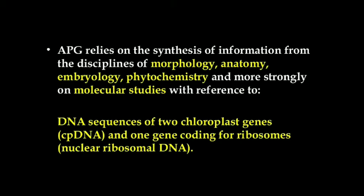APG relies on the synthesis of information from many disciplines like morphology, anatomy, embryology, phytochemistry, and most strongly on molecular studies. It mainly depends on classifying plants based on differences in DNA — differences in the molecular structure of genetic material with reference to DNA sequences in the chloroplast DNA and also nuclear ribosomal DNA.